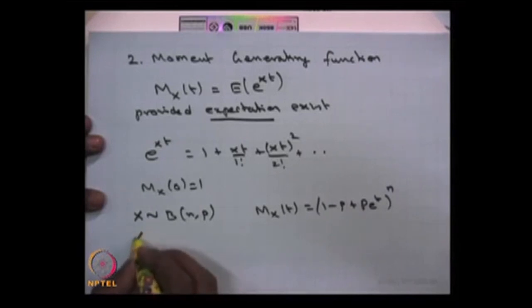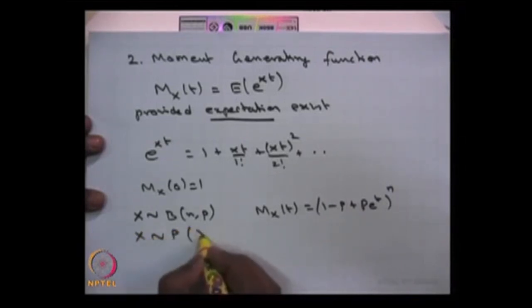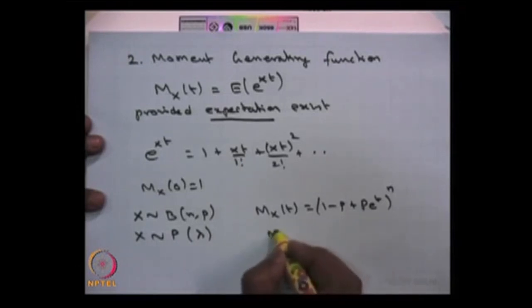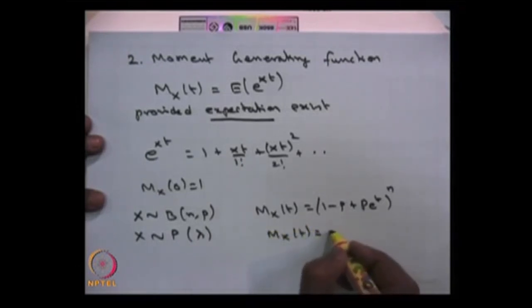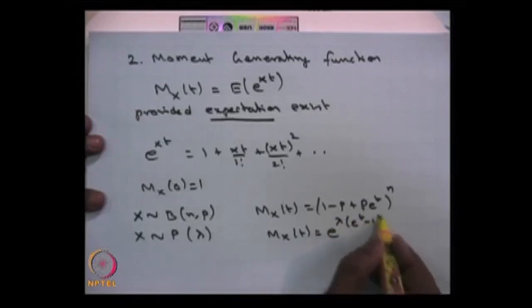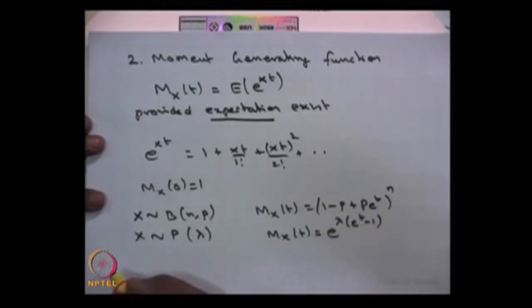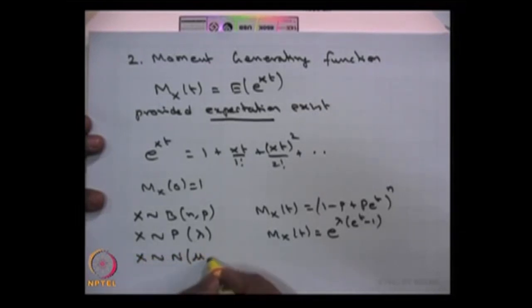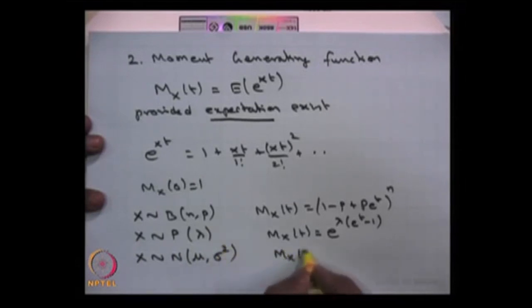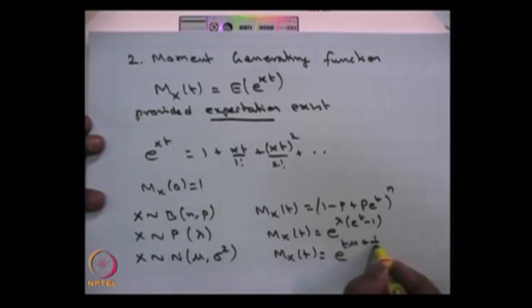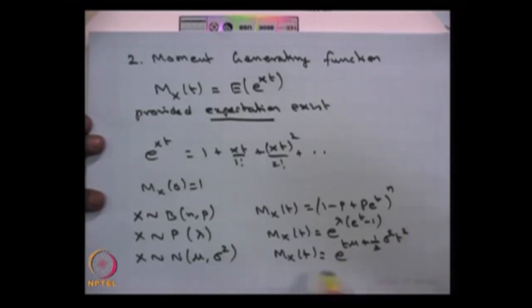Similarly, if X is a Poisson distribution with parameter lambda, then the moment generating function is going to be e power lambda times (e power t minus 1). For the normal distribution, the moment generating function is e power (t times mu plus sigma squared t squared over 2). This is a very important moment generating function because we are going to use the MGF of the normal distribution in the stochastic process part also.